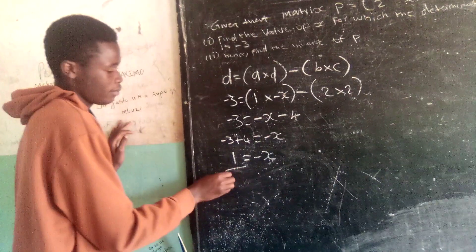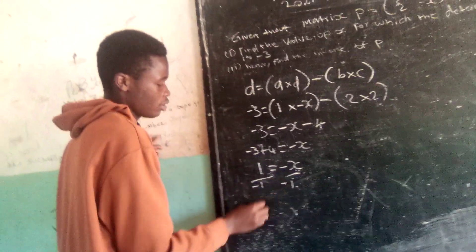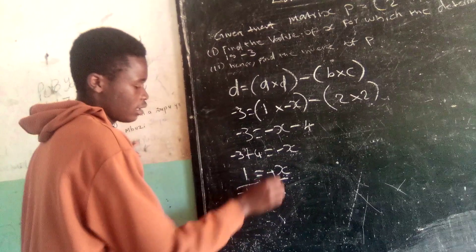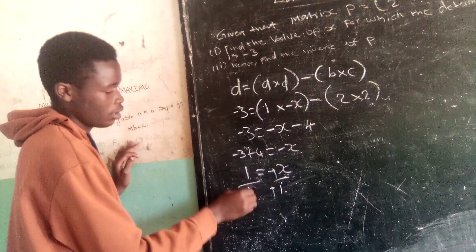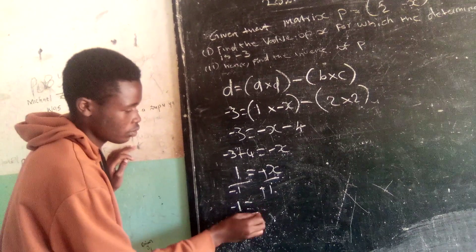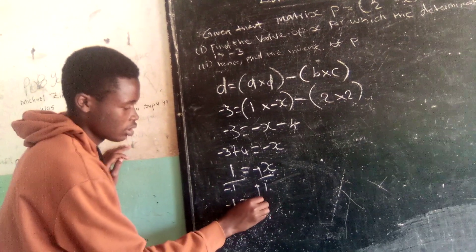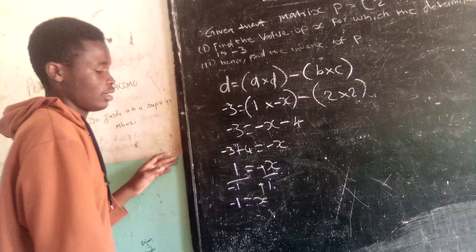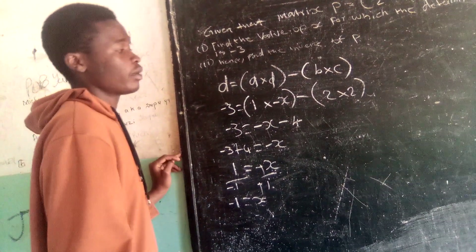We are going to divide by negative 1. Negative 1 is cancelled. So here we are going to give us negative 1 is equal to X. So our value of X is now negative 1.